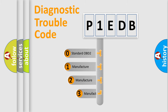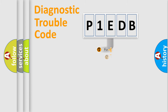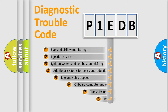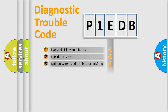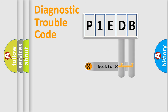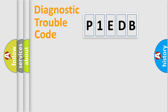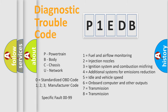If the second character is expressed as zero, it is a standardized error. In the case of numbers 1, 2, or 3, it is a more specific expression of the car-specific error. The third character specifies a subset of errors. This division is valid only for the standardized DTC code. Only the last two characters define the specific fault of the group, and this division is valid only when the second character is zero.